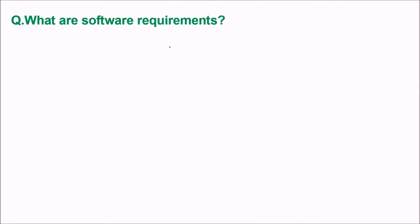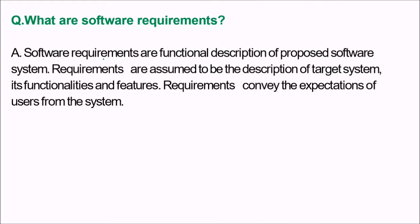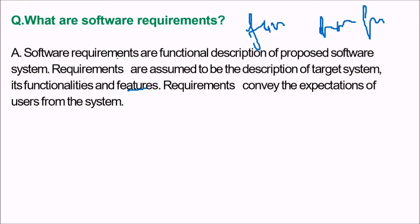What are software requirements? Software requirements are a functional description of a proposed software system. Requirements are assumed to be a description of the target system, its functionalities and features. Requirements convey the expectations of users from the system, and they may be functional and non-functional, with certain constraints.